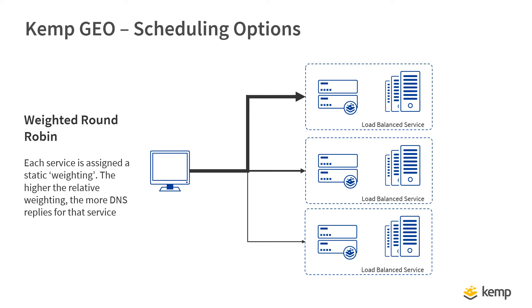In this scenario, each site can be assigned a weighting so that traffic is directed pro rata based on the relative capacity of each site. Again, KEMP's Geo will adjust scheduling based on the availability and number of active connections.